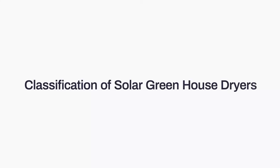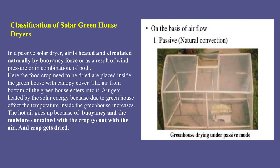These are the classifications of greenhouse dryers. There are some bases on which we classify greenhouse dryers. First, on the basis of airflow, there are two types: natural convection or forced convection. Natural convection is sometimes called the passive mode of heating and forced convection is called the active mode of heating. In the passive solar dryer, air is heated and circulated naturally by buoyancy or as a result of wind pressure or a combination of both.